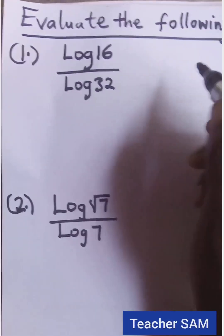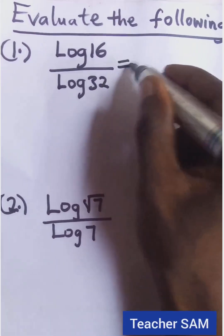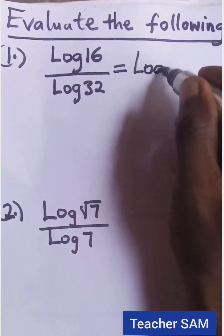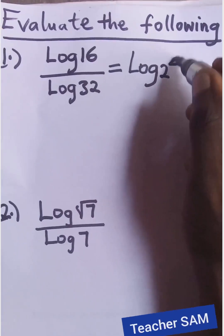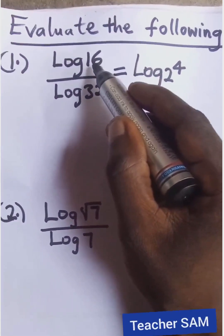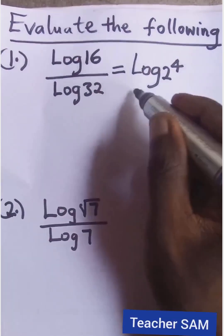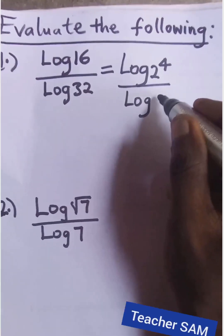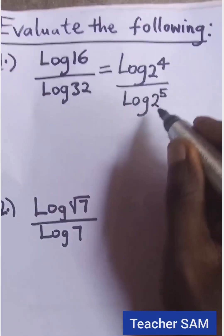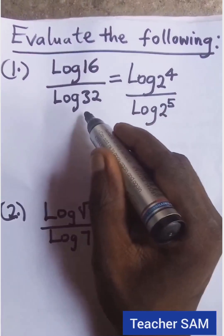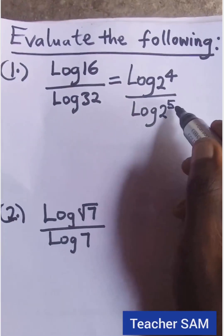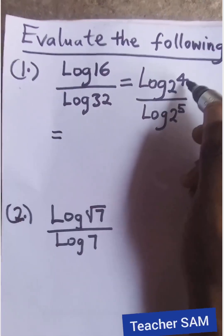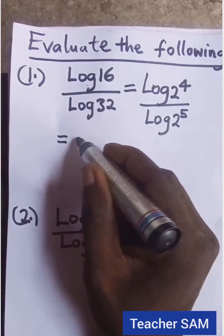Question one: log 16 divided by log 32. The first thing we do is rewrite this as log 2 raised to power 4, because 16 is the same as 2 to the power 4, divided by log 2 raised to power 5, because 32 is the same as 2 to the power 5.